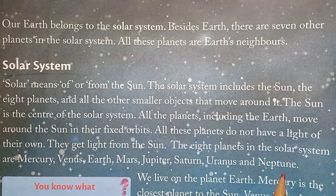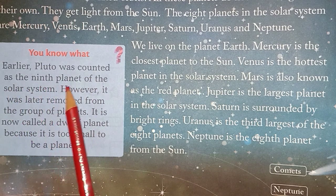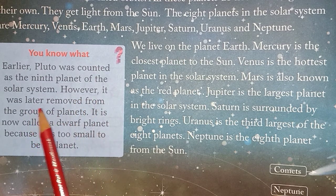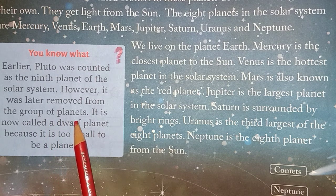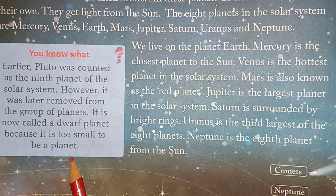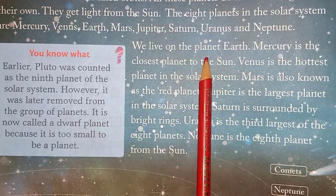There are a total of eight planets continuously revolving around the Sun. Earlier, Pluto was counted as the ninth planet of the solar system; however, it was later removed from the group of planets. It is now called a dwarf planet because it is too small to meet the rules for being a planet. Therefore, we now have only eight planets, and we live on the planet Earth.